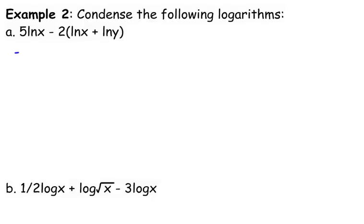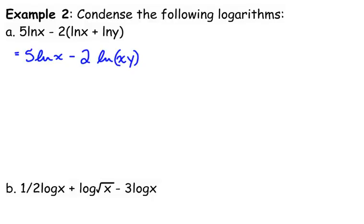I'm going to do this one step at a time. What jumps out to me first is that I'm adding those two logs in parentheses. The sum of two logs can be rewritten as a single log of a product. So I can rewrite the natural log of x plus the natural log of y as the natural log of x times y.